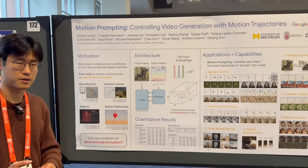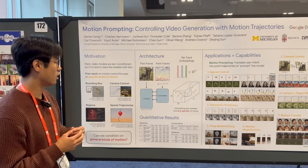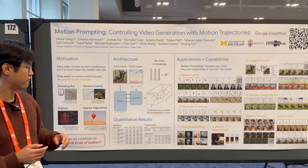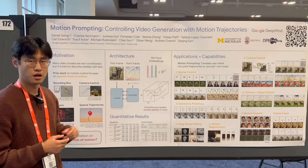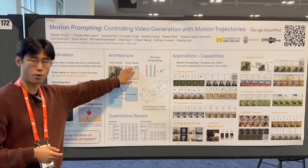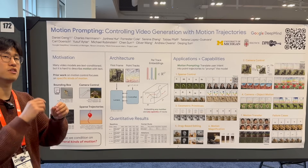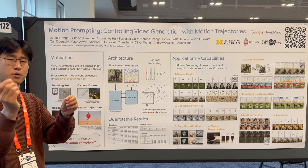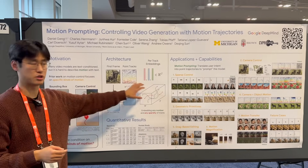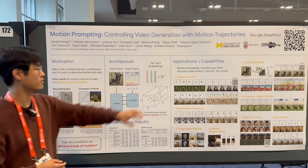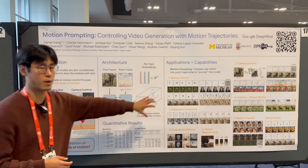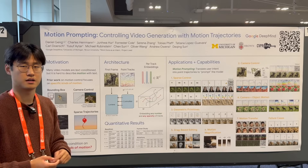Our approach is pretty simple. All we're doing is taking a base video diffusion model and fine-tuning it with a ControlNet where we're feeding in the first frame of the video and point tracks. Given a point in the first frame, what is the motion of that point throughout the video? We fine-tune it to generate a video that starts at that first frame and follows that motion. We have a way to encode these point tracks into a representation that the ControlNet can take.